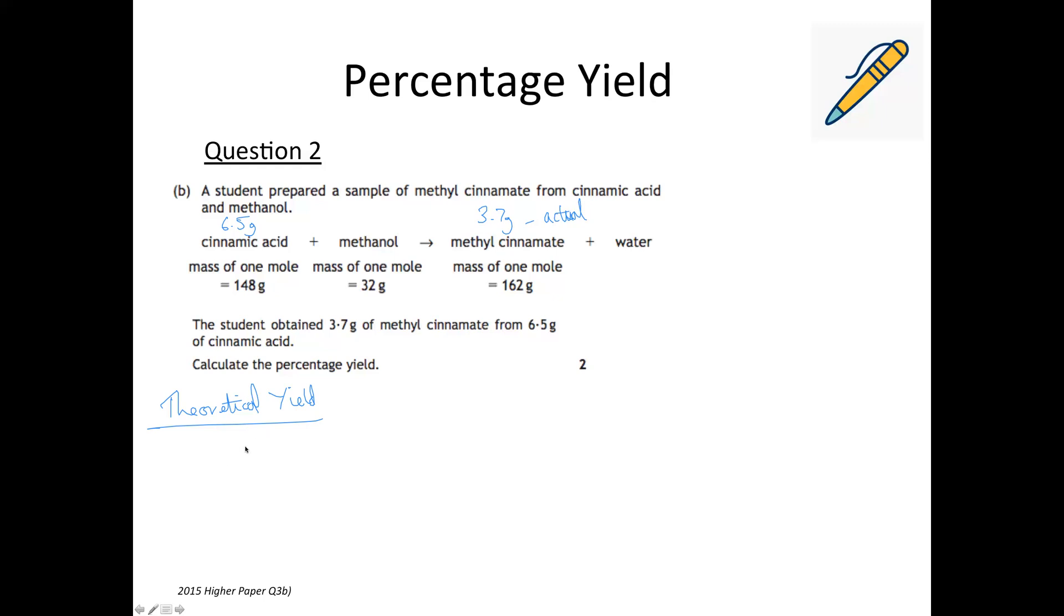So one mole of cinnamic acid is going to produce one mole of the methyl cinnamate. So if we then convert those into masses, one mole of cinnamic acid is 148 grams and one mole of methyl cinnamate is 162 grams. So then we find what one gram would give us and then multiply up to the amount we've got which is 6.5.